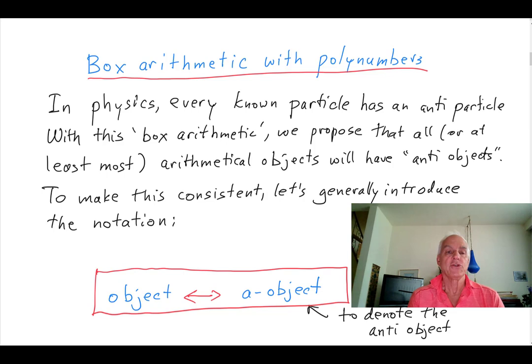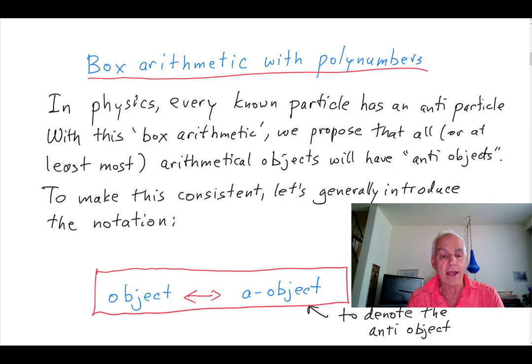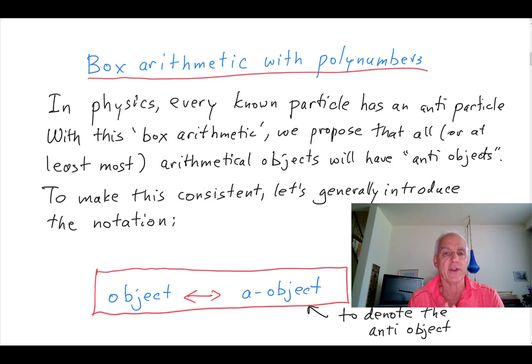Hello everyone, I'm Norman Wahlberger. Today we're carrying on with this new approach, box arithmetic, where we are trying to put the duality between objects and anti-objects foremost in our arithmetic. This is a very novel approach because it's really building on a 20th century physics discovery — that of the fundamental duality between particles and antiparticles in our subatomic world, which ought to rank up there with relativity and quantum mechanics in terms of significance.